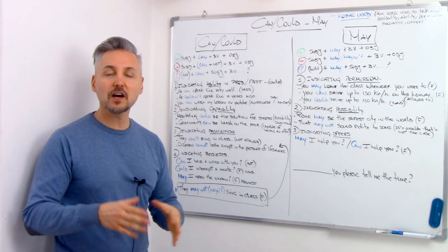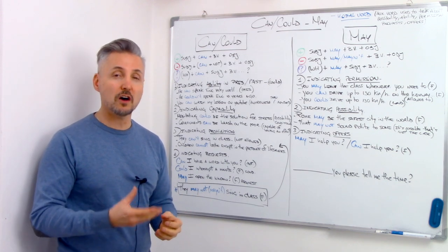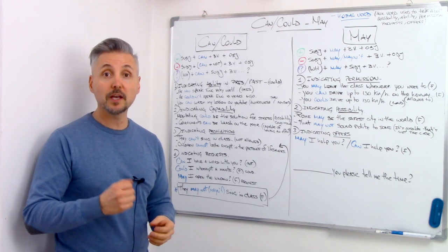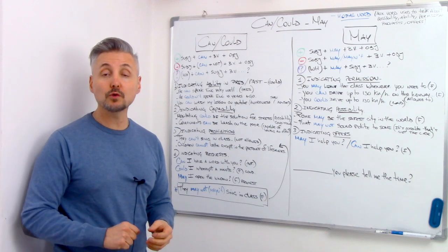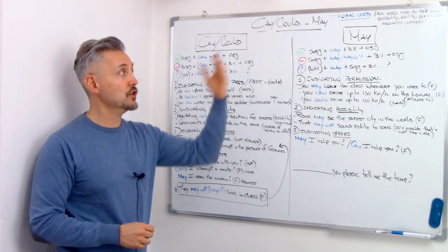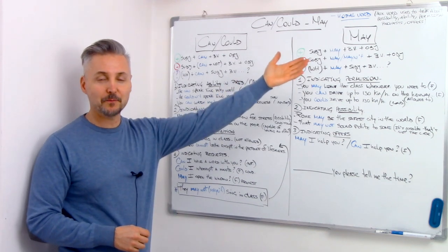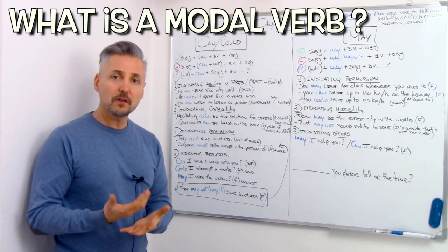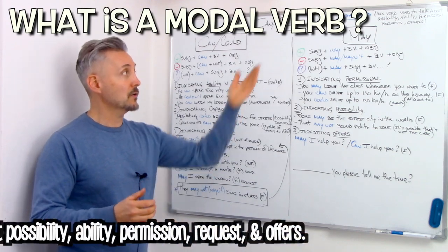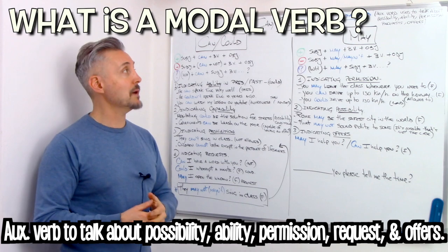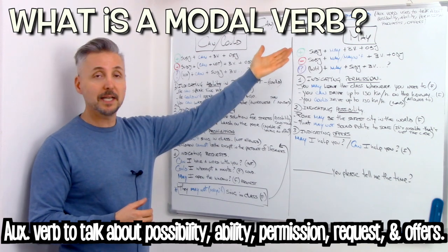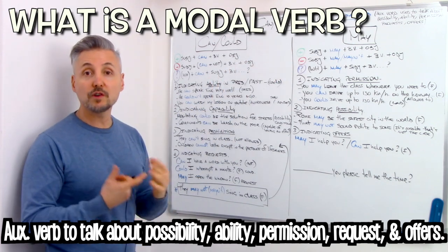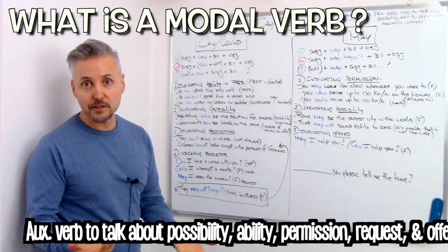I've already talked about modal verbs such as ought to, shall, and would. If you wish to watch those lessons, you may click here. What is a modal verb? A modal verb is an auxiliary verb used to talk about possibility, ability, permission, requests, and offers.